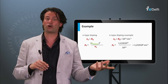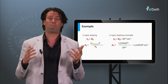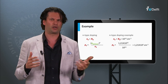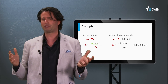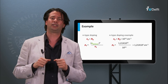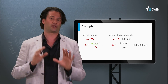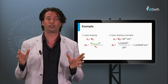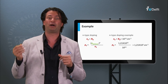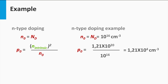Let's take an example. We incorporate 10 to the 16 per cubic centimeter phosphorus atoms in the lattice, in other words we have a donor density Nd of 10 to the 16 per cubic centimeter. As we assume that all donors give a free electron to the lattice, the electron density n0 is equal to the donor density Nd. Now we can calculate the hole density p0: p0 is equal to the square of the intrinsic charge carrier density divided by the electron density n0. So the hole density is given by 1.21 times 10 to the 20 divided by 10 to the 16, giving us a hole density of 1.21 times 10 to the 4 per cubic centimeter.